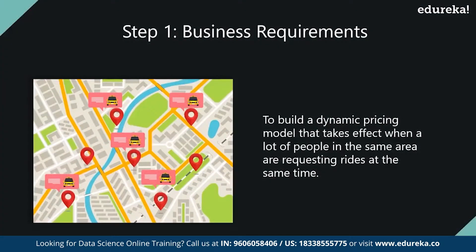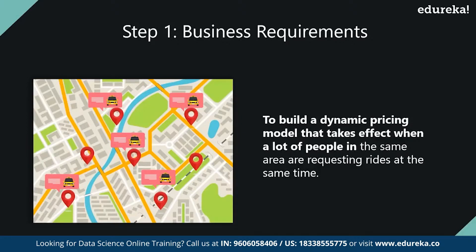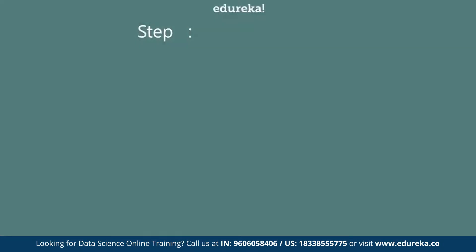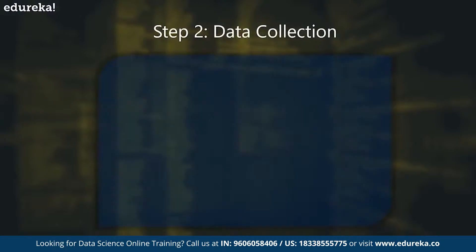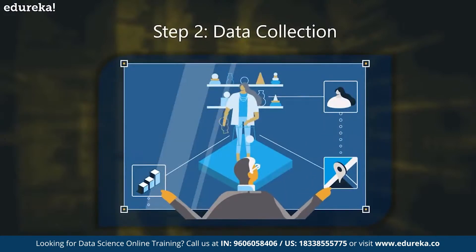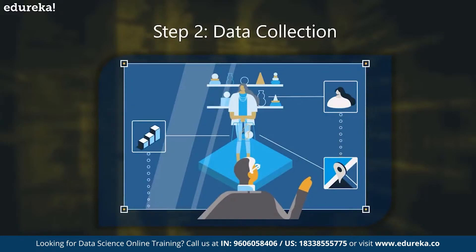A data science process always begins with understanding the business requirement or the problem you're trying to solve. In this case, the business requirement is to build a dynamic pricing model that takes effect when a lot of people in the same area are requesting rides at the same time. This is followed by data collection. Uber collects data such as the weather, historical data, holidays, time, traffic, and pick-up and drop location, keeping track of all of this.